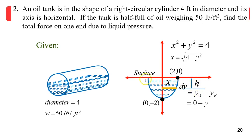Since we draw the surface of the liquid at the x-axis, the height h would be from 0 down to the y value, so that's 0 minus y. Taking the equation of the circle: since the radius is 2, x² + y² = 4. Solving for the length x, we get x = √(4 − y²).